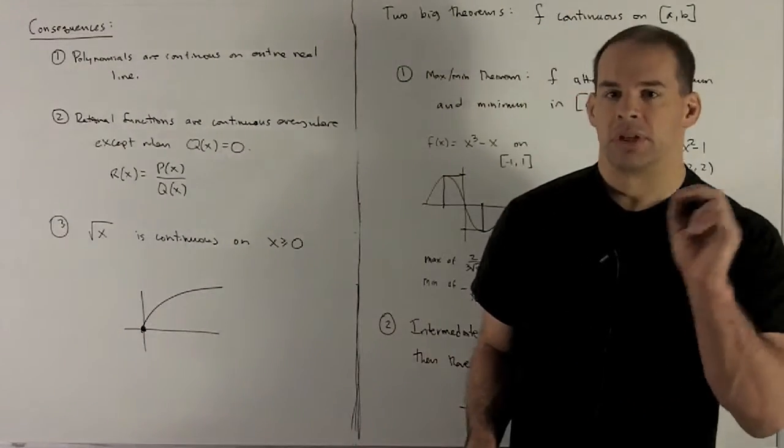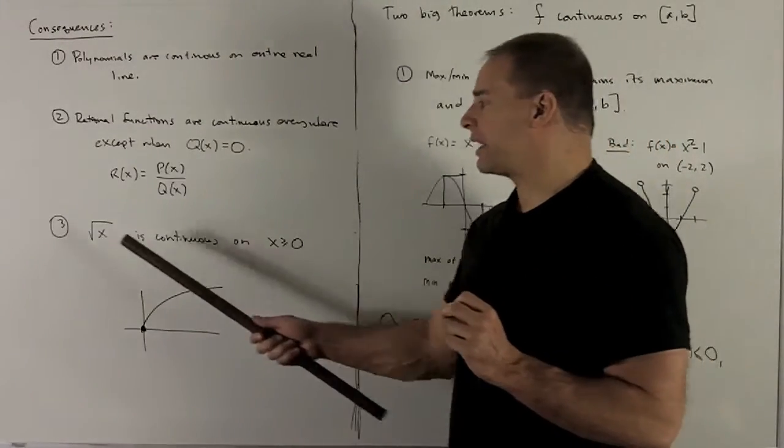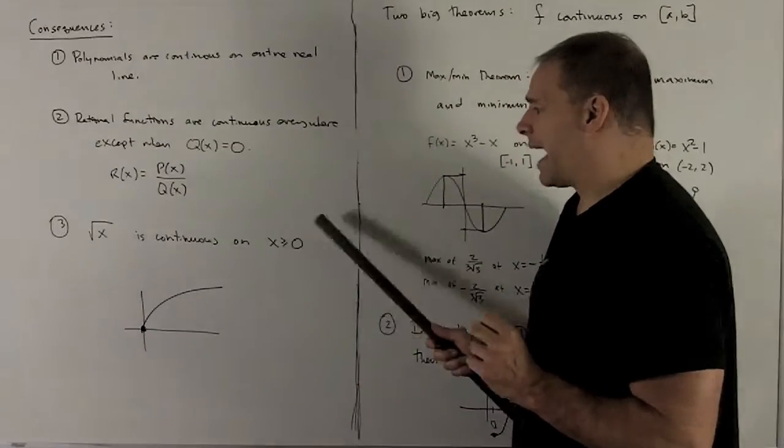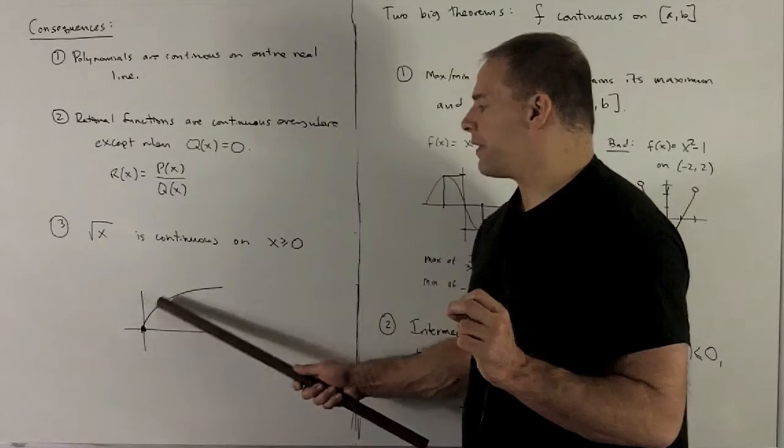Okay, something not quite one and two. For instance, we could take square root of X. This is going to be continuous where it's defined, so it's going to be X bigger than or equal to zero. So you'll notice if I'm away from zero, we're just looking at regular continuity.